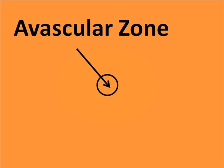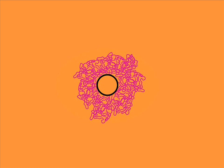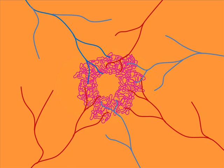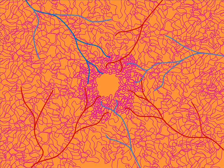An exception is the foveal capillary free zone, also called the avascular zone. This area is slightly larger than the floor of the foveal pit. Surrounding this avascular zone is a dense ring of capillaries located down in the retinal tissue. These retinal capillaries serve the tightly packed nerve cells of this region and receive their blood supply from the branches of the larger retinal arteries.